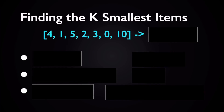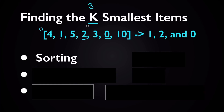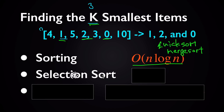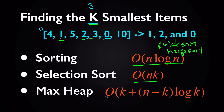For example, if the given array is this array of integers and the given k is three, we want to find the three smallest items, which are one, two, and zero. There are a few different approaches. The simplest is to sort the array in ascending order so the smallest items come first, then take the first k items — that takes O(n log n) using quick sort or merge sort. Another approach uses a variation of selection sort, which takes O(n·k) in time. My personal favorite approach uses a max heap, which takes O(k + (n − k) · log k) in time.